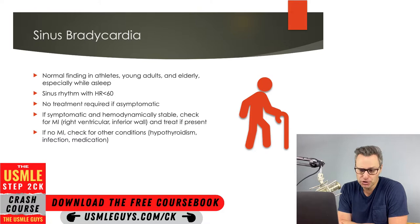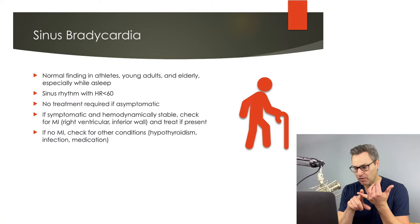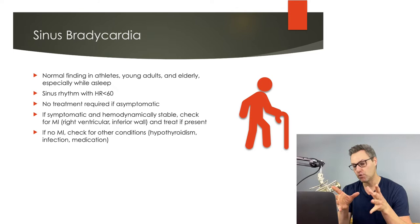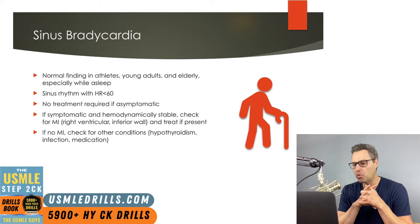Sinus bradycardia is characterized by patients with a heart rate below 60 beats per minute, but that is in sinus rhythm — meaning the rhythm is regular, there's a P wave before each QRS, a QRS after each P wave, and they have normal morphology. The PR interval is normal, meaning it is between 0.12 and 0.2 seconds.